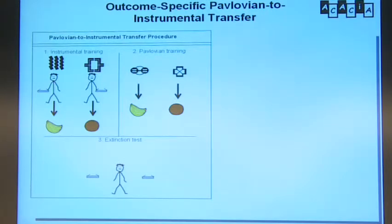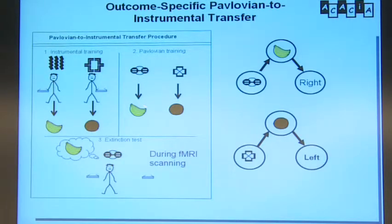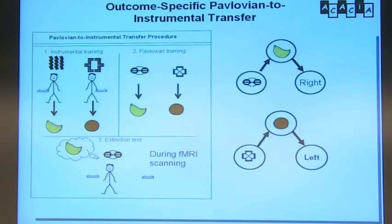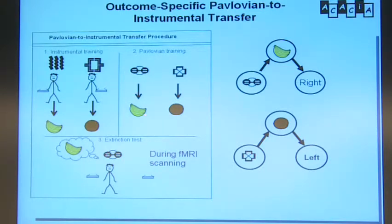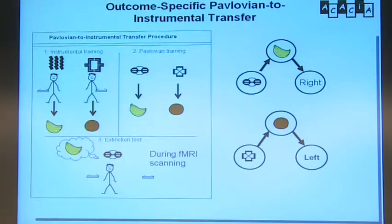In the scanner, subjects are told: I'm going to show you symbols, just press whichever key comes to mind — don't think too much, just press what feels right. Theoretically, Pavlovian stimuli should produce chance responding since they've never been associated with an action. But when you see this stimulus, you can think of the banana — you've learnt that — and thinking of the banana reminds you of this action. There's no direct pathway, but there is a pathway via the banana. This is outcome-based stimulus-outcome responding, and identifying brain regions responsive to outcome-based but not non-outcome-based responding is what interests us.